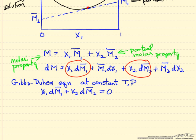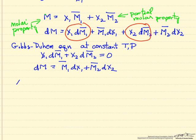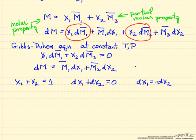The Gibbs-Duhem equation, at constant temperature and pressure, states: x1 times the differential of the partial molar quantity for component one, plus x2 times the differential of the partial molar quantity for component two, equals zero. So those two terms circled in red add to zero, and the equation reduces to just two terms. We also know x1 plus x2 equals one for a binary system, so taking differentials of both sides gives dx1 equals minus dx2.